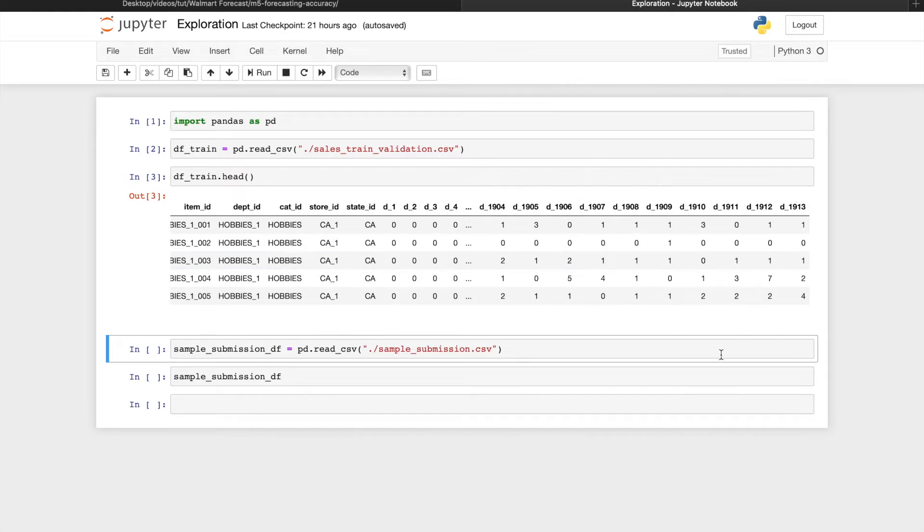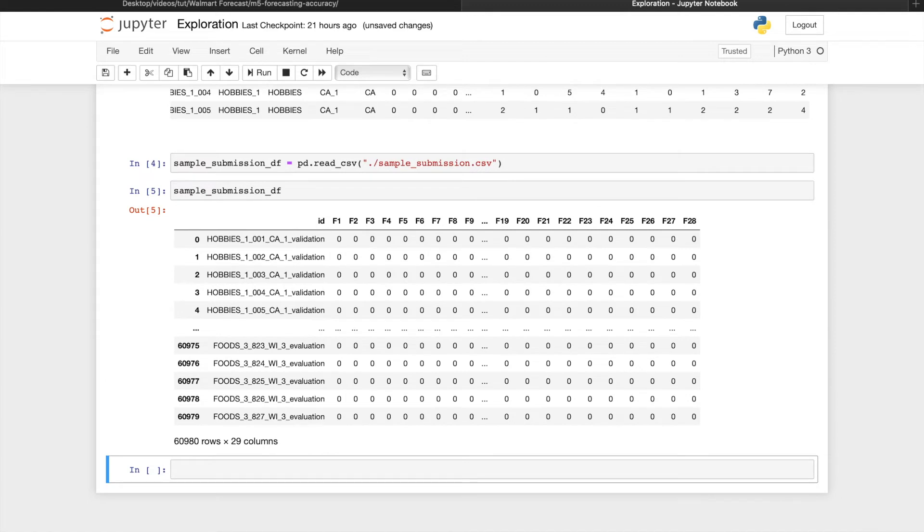There is one extra file called samplesubmission.csv, which is an example of what our submission file should look like. Each value ID is a concatenation of item ID and store ID, and either ends with validation or evaluation.